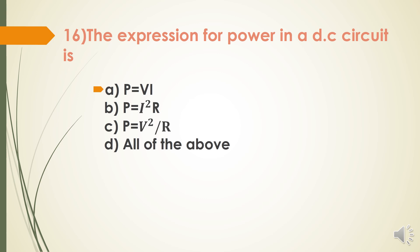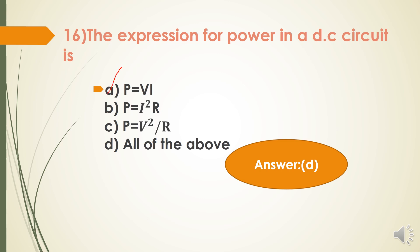Next question: The expression for power in a DC circuit — P = V×I is a correct answer; P = I²R is also a correct answer; P = V²/R is also a correct answer. Therefore, the answer is option D — all of the above.